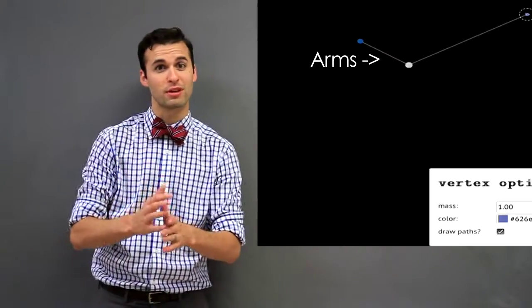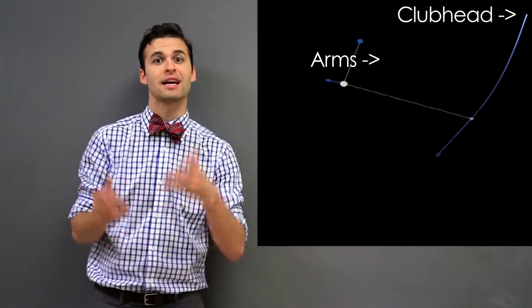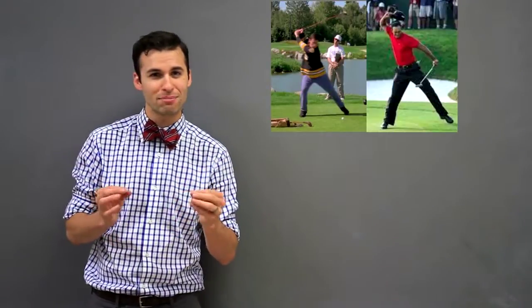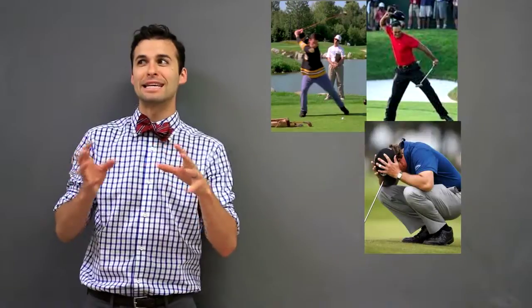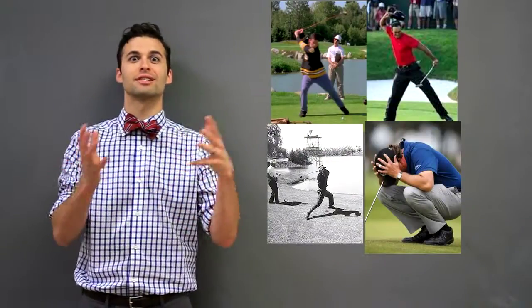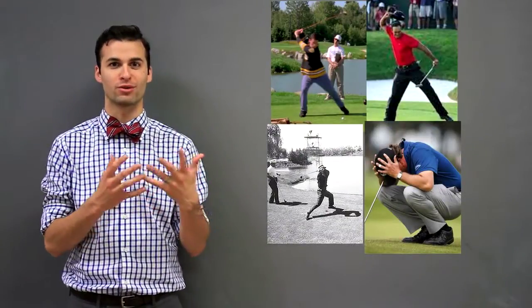If you have played golf before, then you have utilized the advantages of a double pendulum. Your arms are one pendulum, and then the club head is the next, as seen in this simulation. Which is probably why golf is so hard, because any minute change in the initial conditions can drastically change the outcome of your swing.